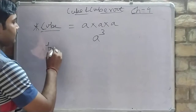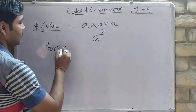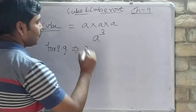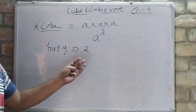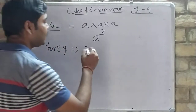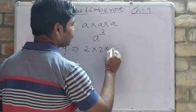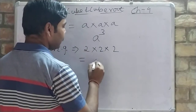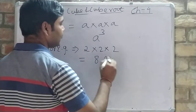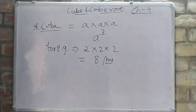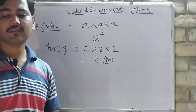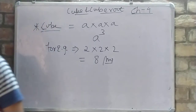For example, suppose there is a number 2 and we have to find the cube of 2. We will multiply 2 three times: 2 × 2 × 2 = 8. So 8 is the answer. This is the way of finding a cube — it is very simple.